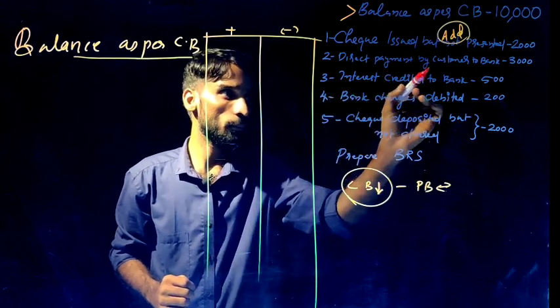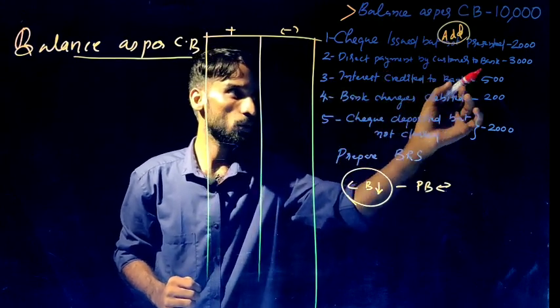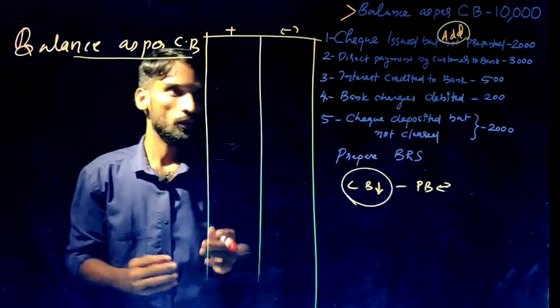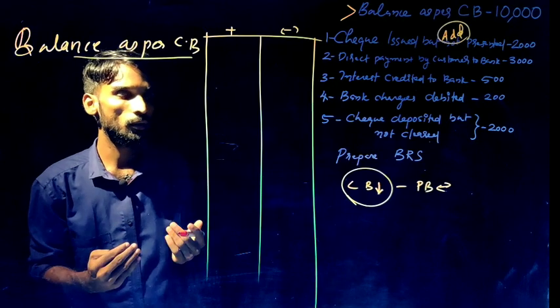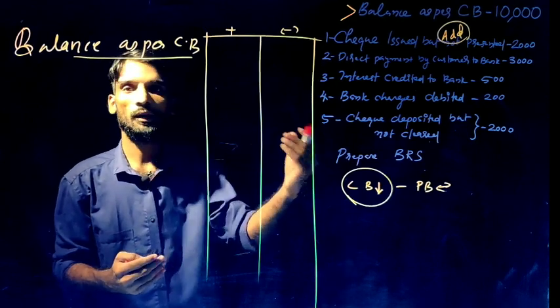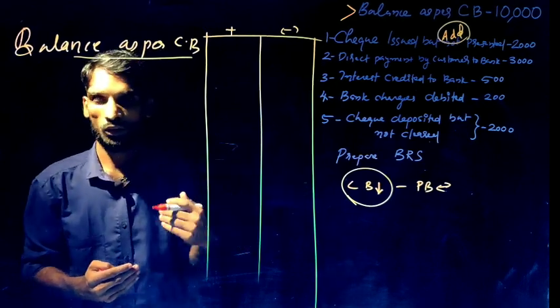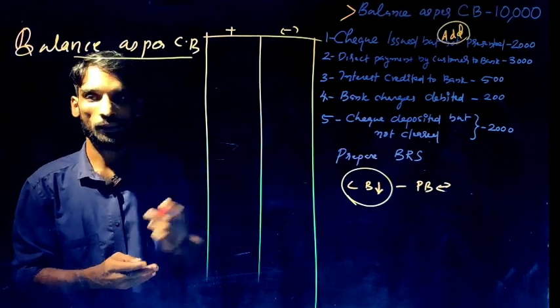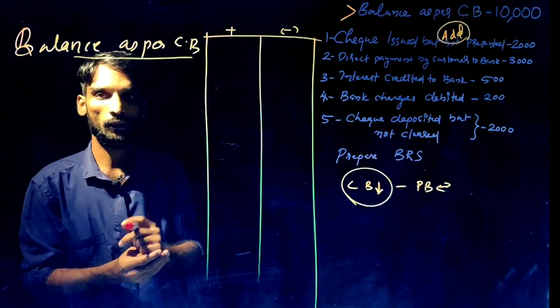Transaction two: direct payment by customer to bank. The customer makes a direct payment into the bank account, which affects the bank balance.